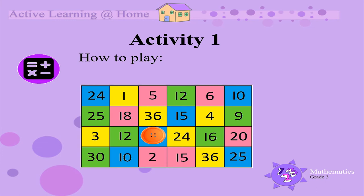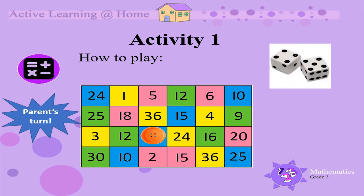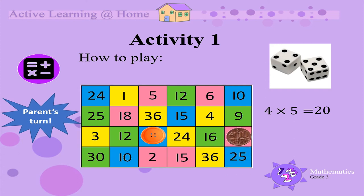Now it's your parents' turn. They should roll the dice and look at the 2 numbers. Multiply the 2 numbers together. 4 times 5 is 20. They should then place their counter on the number 20.